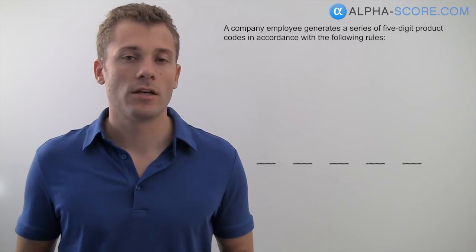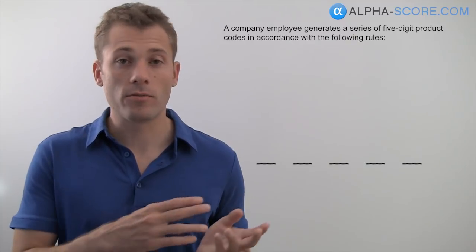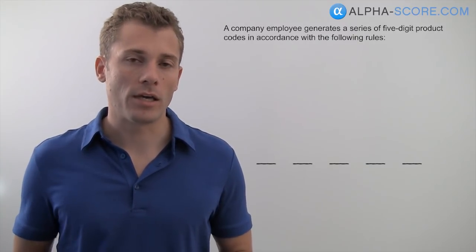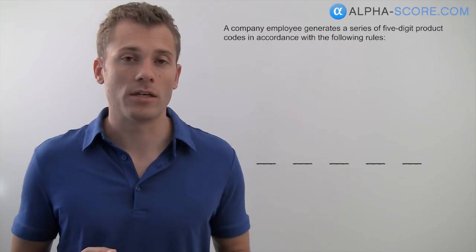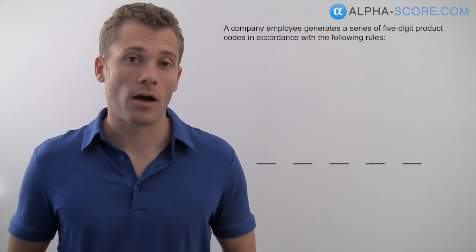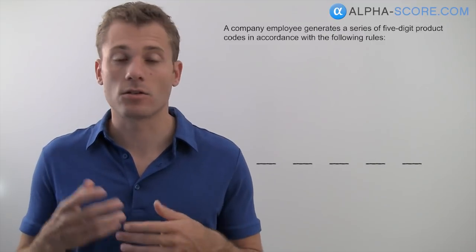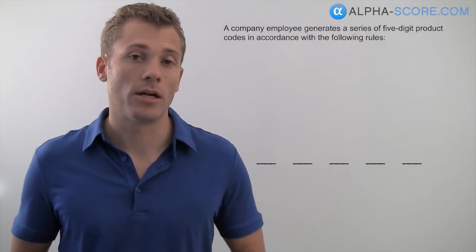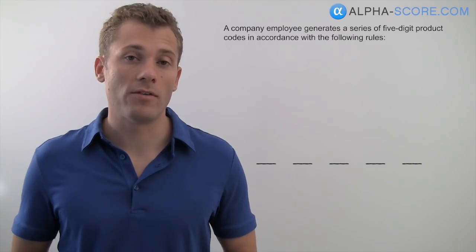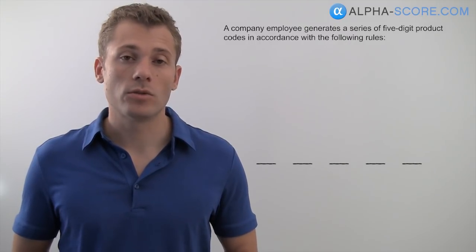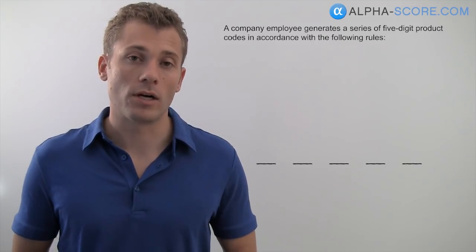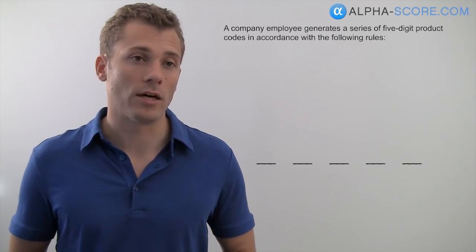This game gives us digits and we're placing them in order from first to fifth, so we know it's a basic ordering game — you're putting things in a simple order from one to five, or one to six, or however many entities there are. In this case we've got five entities going into order, so we're going to draw five placeholders or five lines to hold those entities.